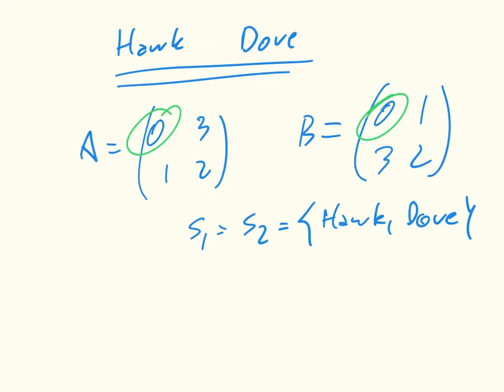If a hawk encounters a dove, then the dove gets very little, whilst the hawk gets almost everything.